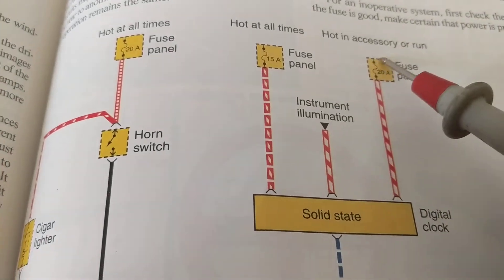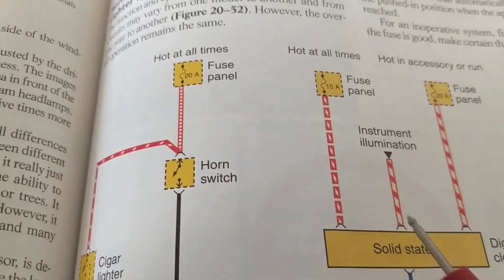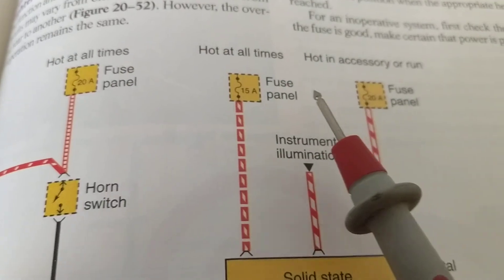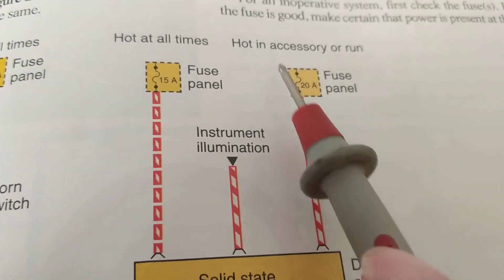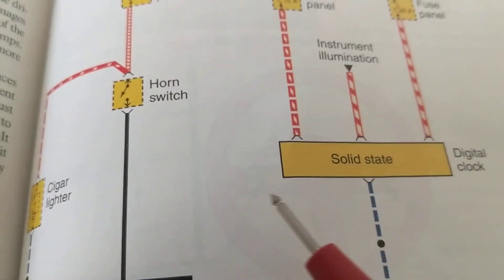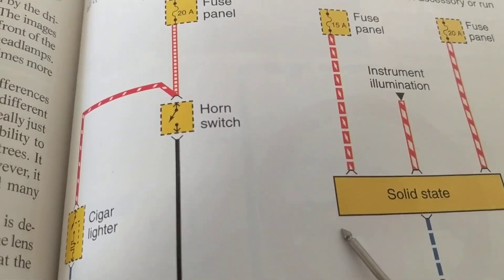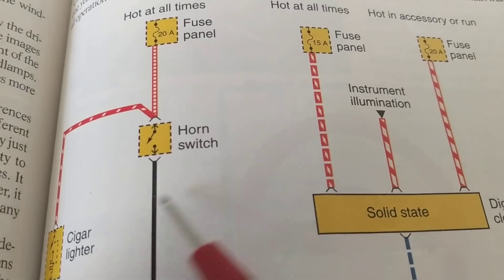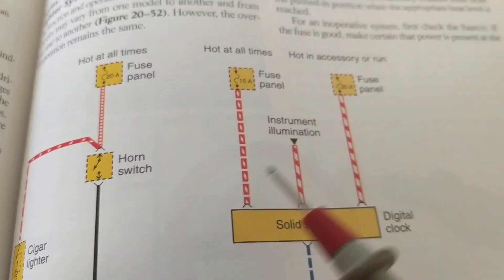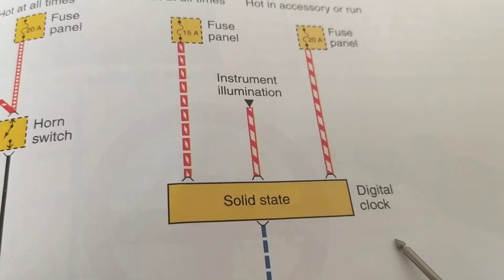Hello once again. We're going to be discussing hot at all times — accessories in your car that are on all the time. From this block diagram, you can see a digital clock.